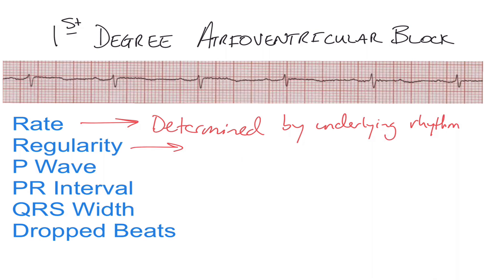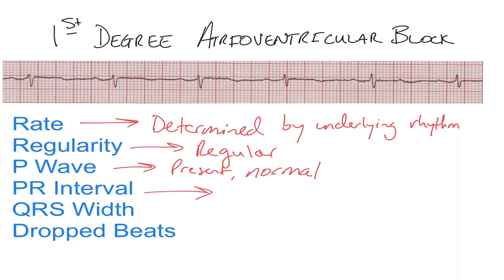It is a regular rhythm. The P waves are present and normal. The PR interval is elongated, which is the telltale sign that you're probably dealing with an AV block. The QRS width is normal as well.